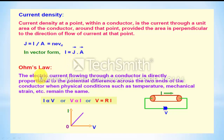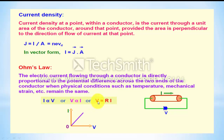Ohm's Law: The electric current flowing through a conductor is directly proportional to the potential difference across the two ends when temperature and other physical conditions remain constant. If we increase the number of cells, the current increases. Mathematically, V is proportional to I, or V equals R·I, where R is a constant. The V versus I graph for a conducting wire is a straight line passing through the origin.